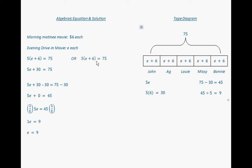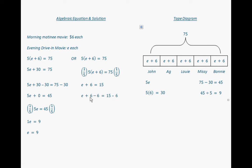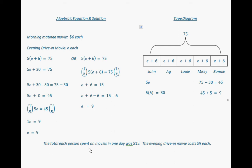There's another way to do this. Going back to the original equation, we can start by taking the multiplicative inverse of 5 and multiplying one-fifth times the whole equation. One-fifth times 5 gives us one, leaving the quantity E plus 6, and one-fifth of 75 is 15. Then to isolate E, we subtract 6 from both sides, giving us E equals 9. So the total each person spent on movie tickets in one day was $15, because nine plus six is fifteen, and the evening drive-in movie cost $9 each.